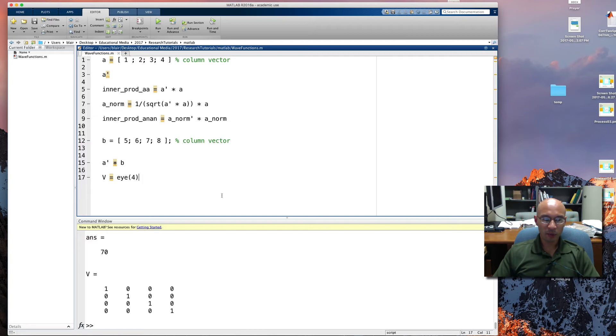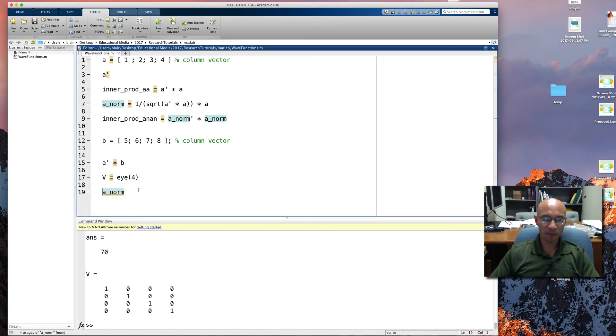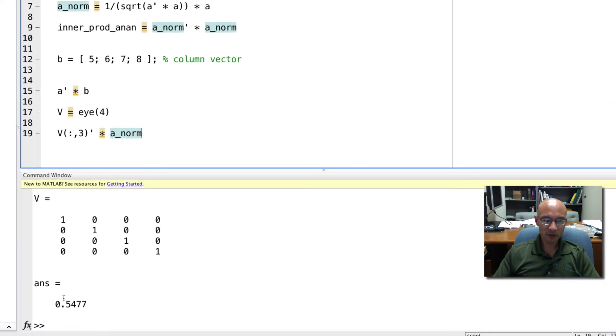And I can pull out, say, the third component of A. Actually, let's use A norm. So the way I do that is I'm going to use this column, the third column, and I'm going to pull it out as a vector, but we're going to transpose it. So there's the third column. We transpose it. We multiply. Remember, that's just like taking the third component or the third basis vector and you're forming its inner product with psi, which in this case is the normalized A. And if I run this, we get the .5477. That's this last line, line 19 here.